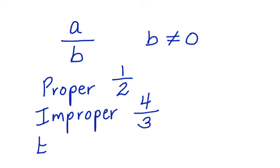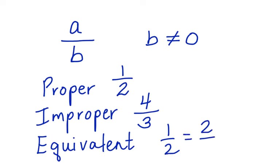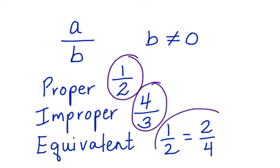And we can also have equivalent fractions. Equivalent, meaning equal, where one-half, in this example, is equal to two-fourths. We can say these are equivalent fractions. Each of these examples qualifies as a rational number.